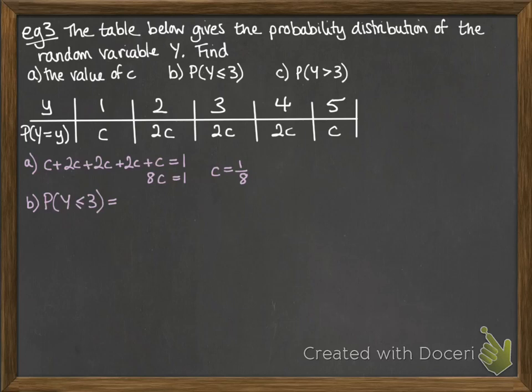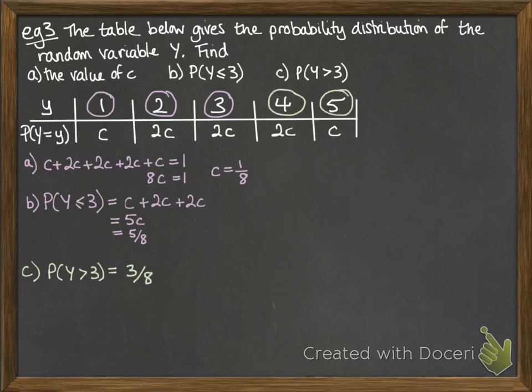Second one, the probability that Y is less than or equal to 3, well, that could be either a 1, a 2, or a 3. So we need to add up those values there. So that would be 5/8. And the last one, the probability that Y is greater than 3, that would be 4 and 5, not including 3, strictly greater than 3. So that would be 2c plus c, which gives us 3/8. Or we could think about it as 1 minus our answer to part b.